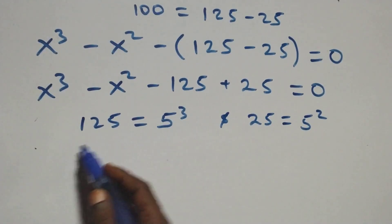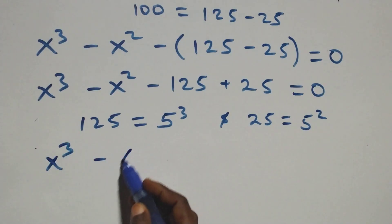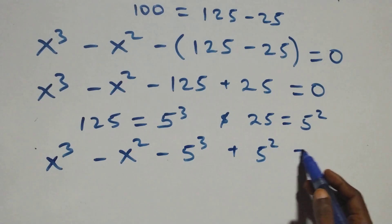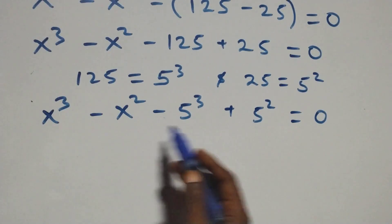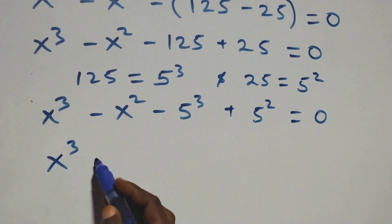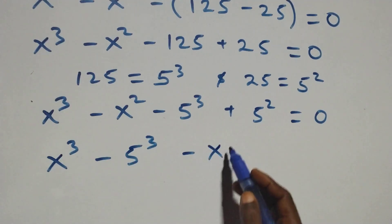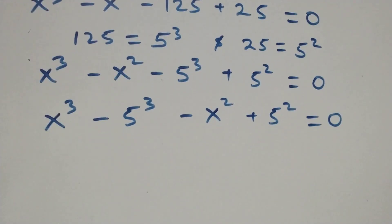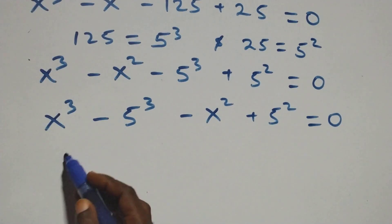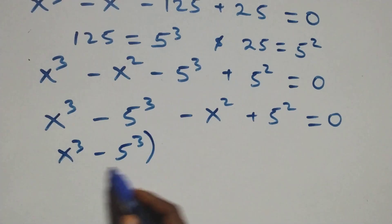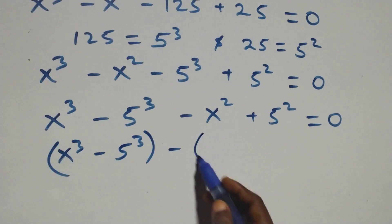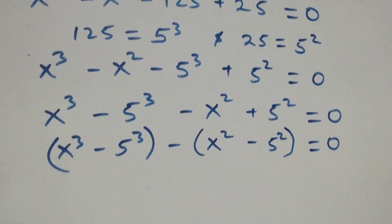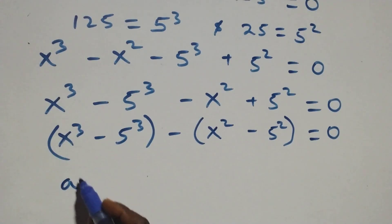We can rearrange and write this as x cubed minus 5 cubed minus x squared plus 5 squared equals 0. Then we group as (x cubed minus 5 cubed) minus (x squared minus 5 squared) equals 0.